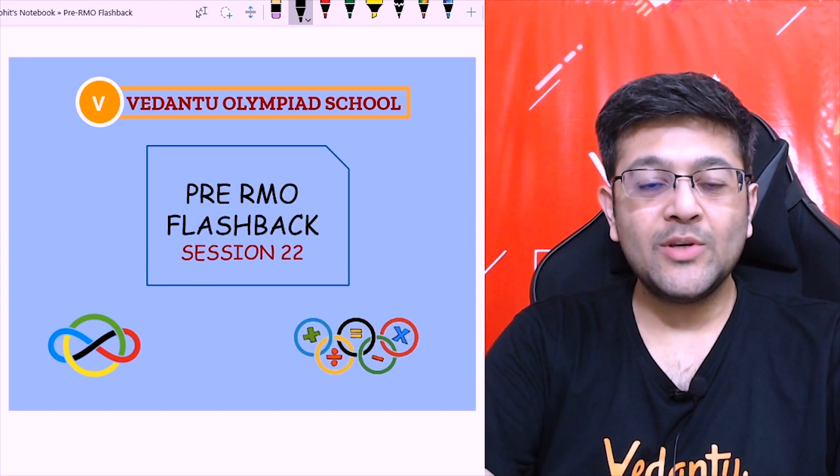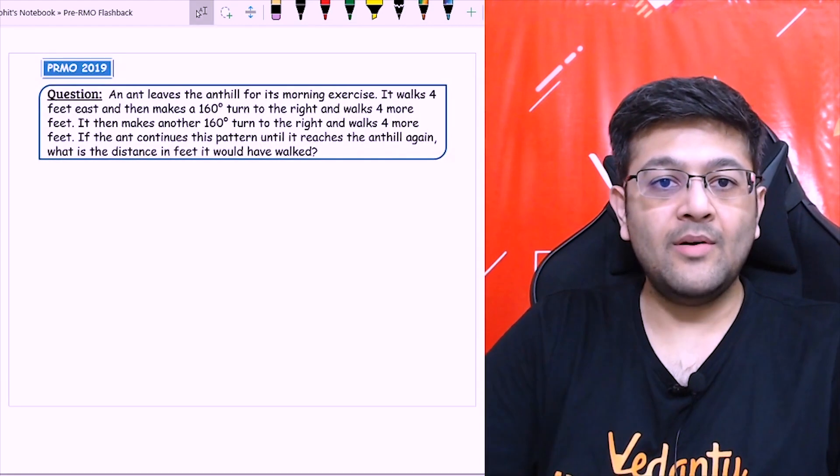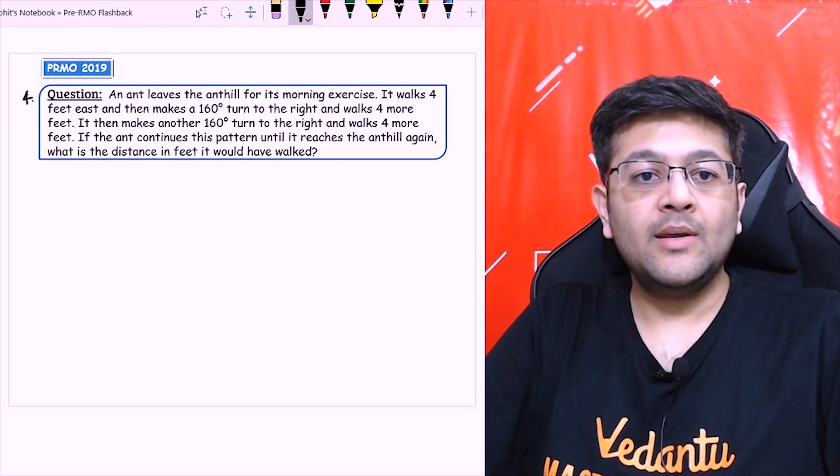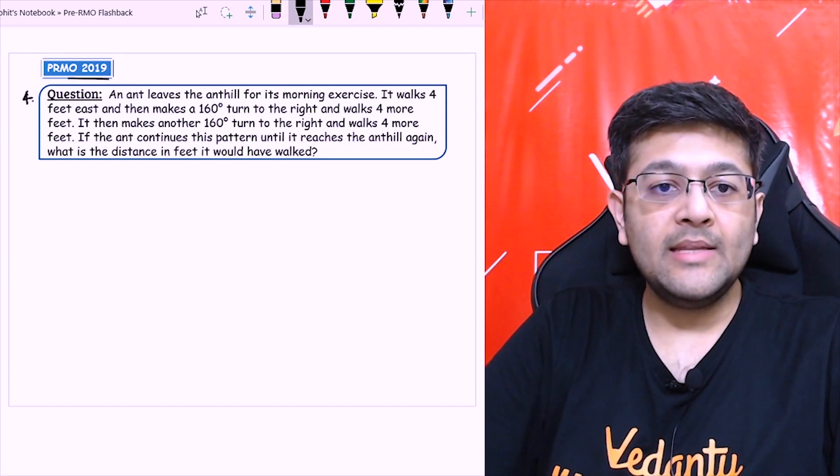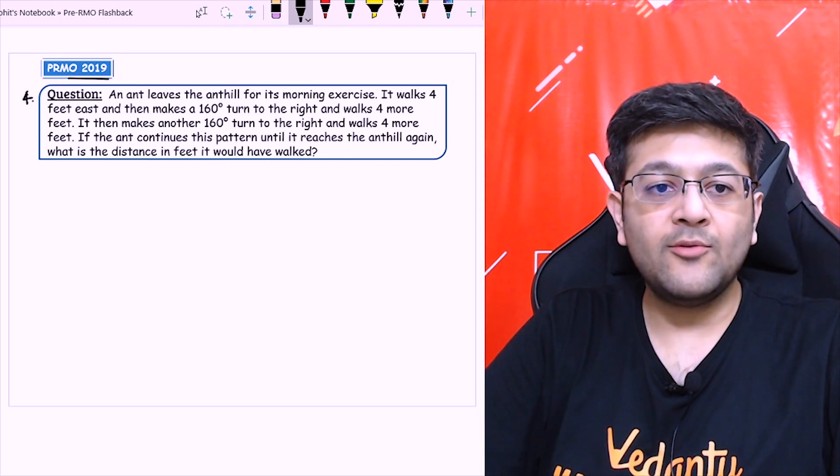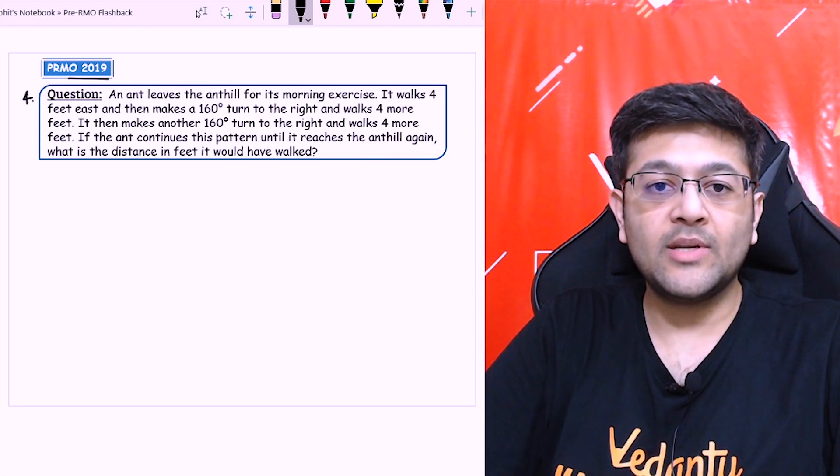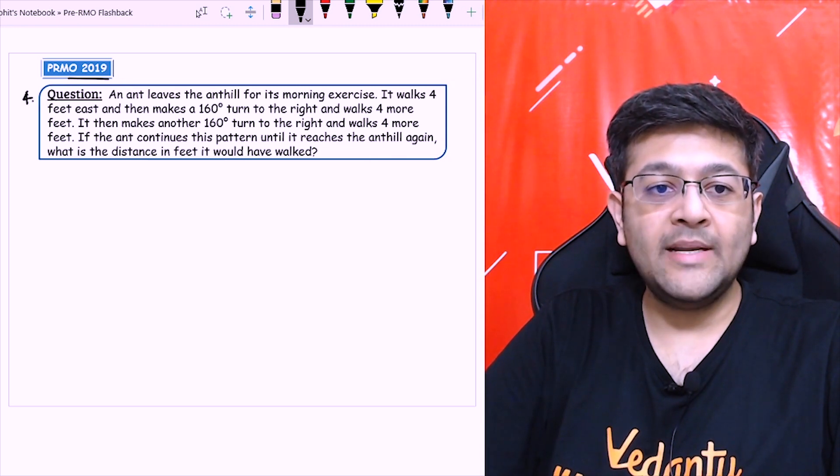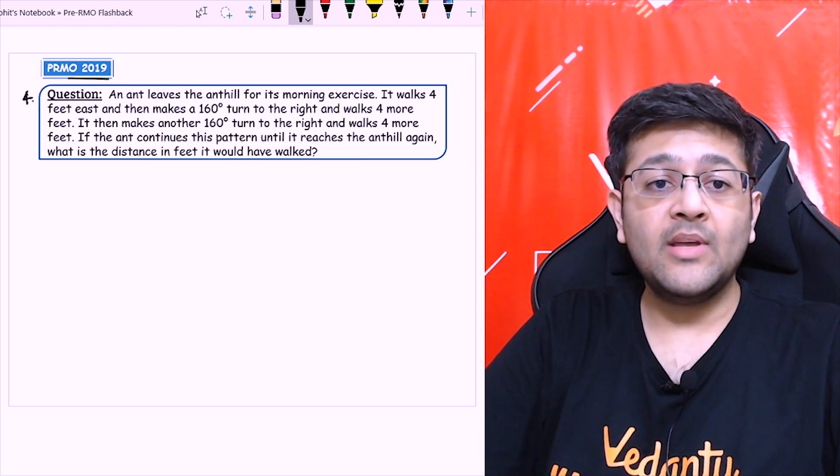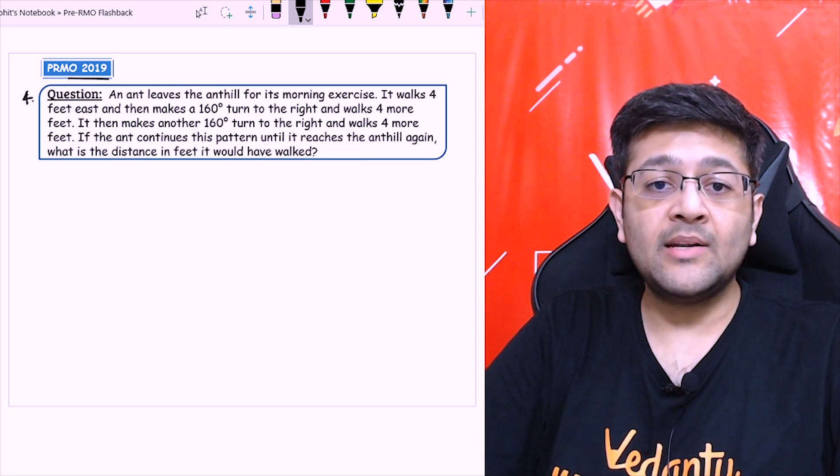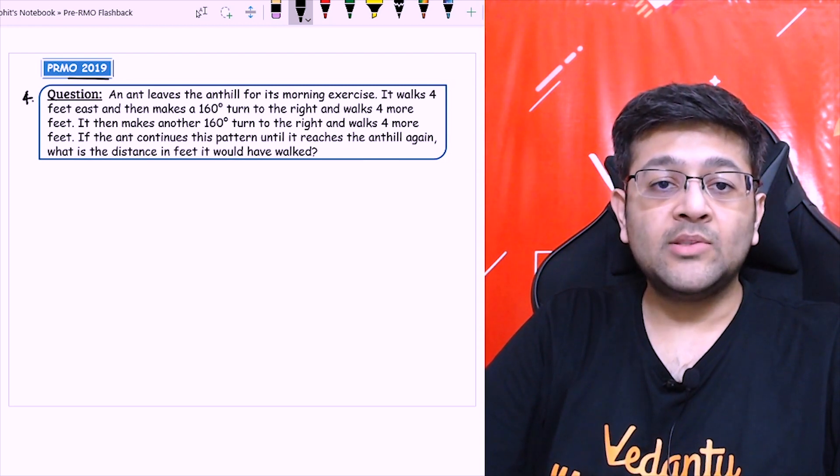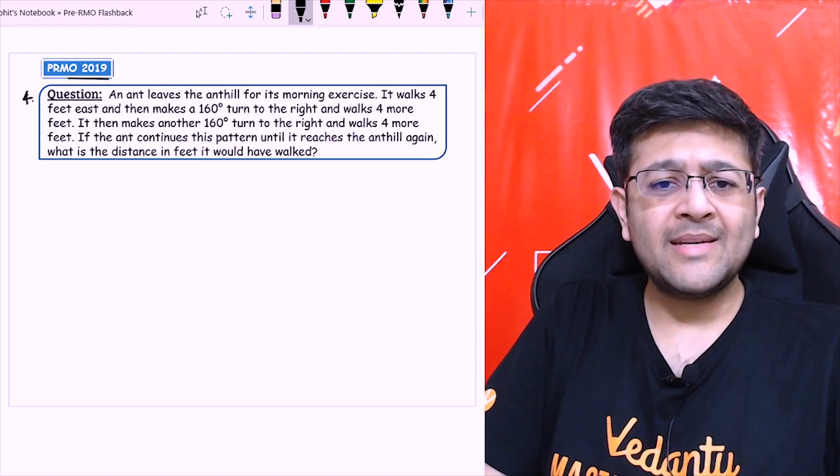Let's start with the 4th question of pre-RMO 2019. The question is: an ant leaves anthill for its morning exercise. It walks 4 feet east and then makes a 160 degree turn to the right and walks 4 more feet. It then makes another 160 turn to the right and walks 4 more feet. If the ant continues this pattern until it reaches the anthill again, what is the distance in feet it would have walked? First of all, let's draw a basic diagram.